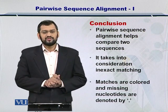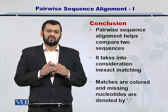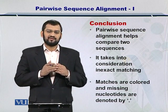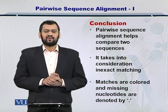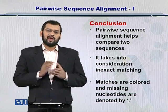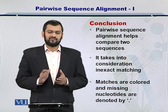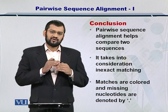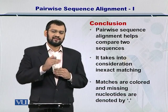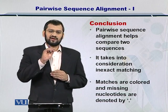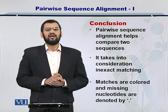In conclusion, pairwise sequence alignment allows you to compare two sequences against each other and it is an inexact matching process. As we saw in the second alignment example, if some amino acids or nucleotides are not present in the other sequence, then you represent them by placing a dot, and this is called a gap.